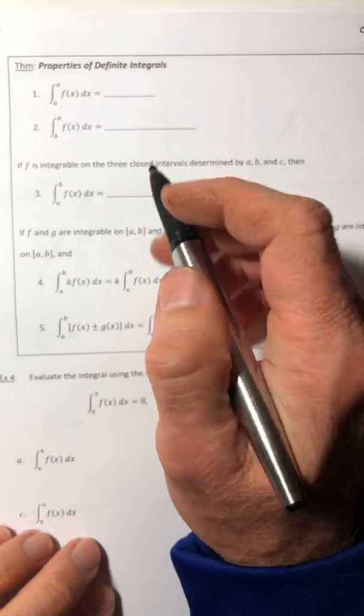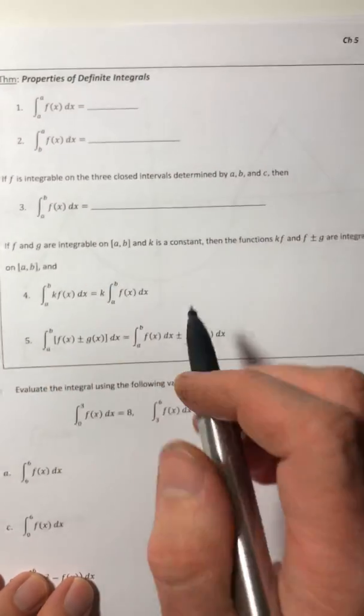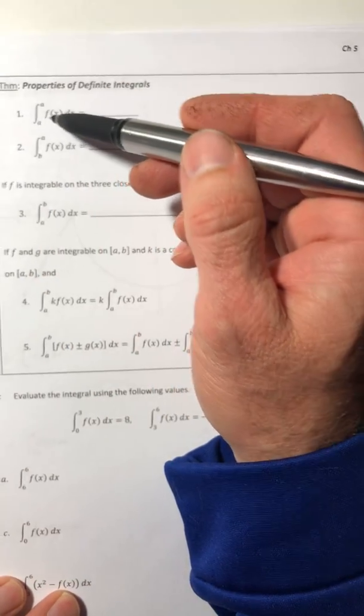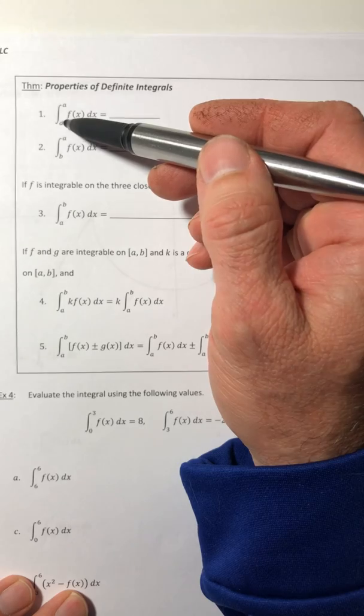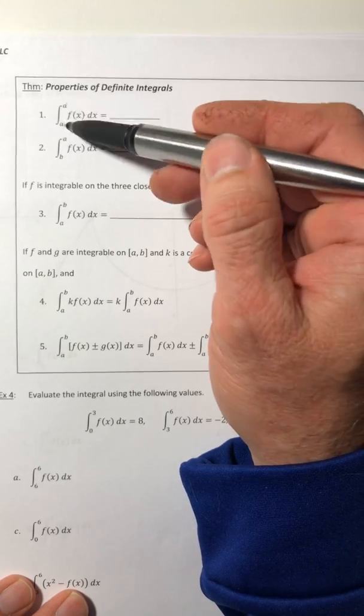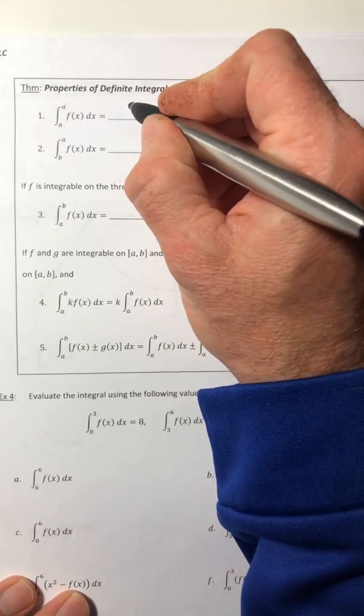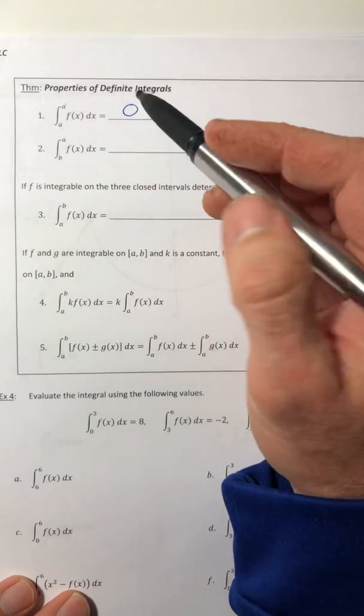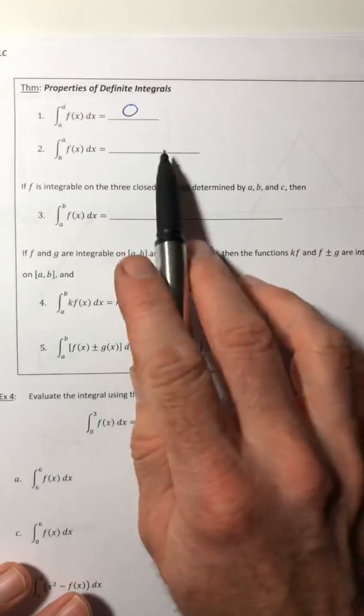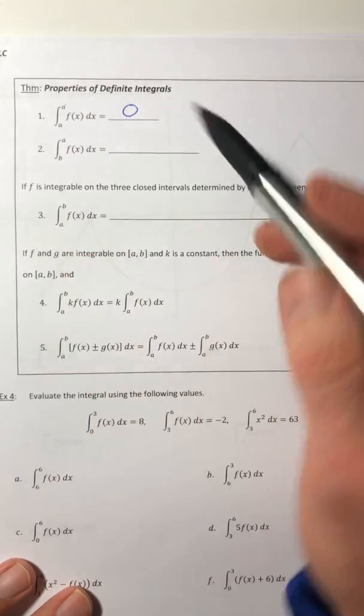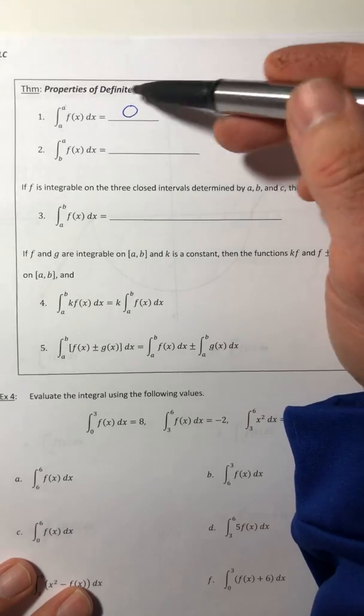Alright, in this last video we're going to look at properties and use the properties of these definite integrals. So property number one is generally a favorite. If you integrate from A to A, so if these two numbers match, it's going to equal zero because you're doing the area from A to A, so it's really just the area of a line which is zero.